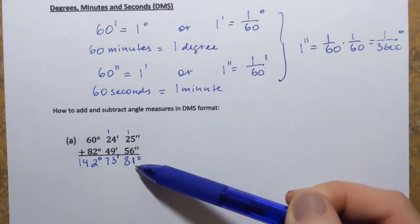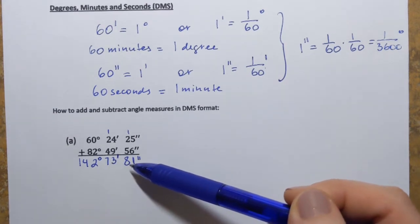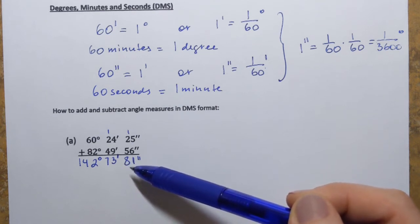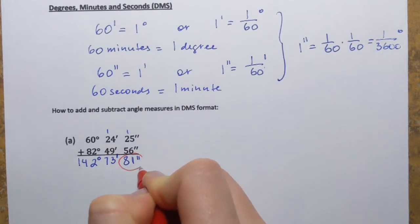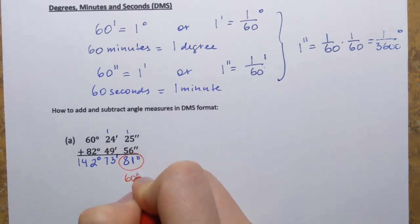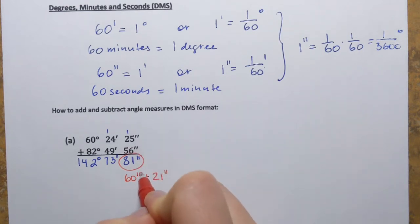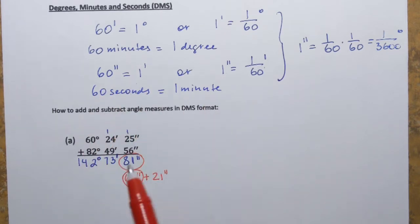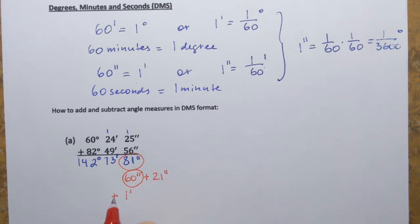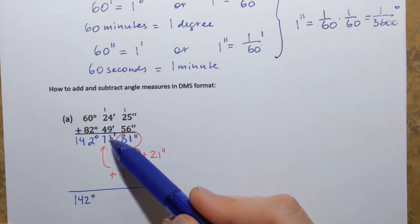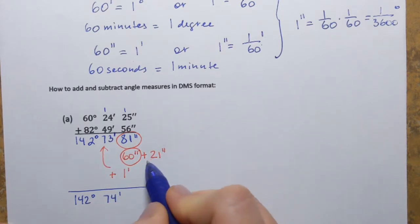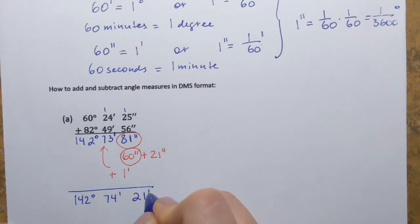Now, if seconds or minutes are greater than or equal to 60, we need to make a conversion. Starting on the right: 81 seconds is 60 seconds plus 21 seconds. We know 60 seconds equals 1 minute, so we convert it and add that 1 minute to the minutes. Now we have 142 degrees, 74 minutes, and 21 seconds.